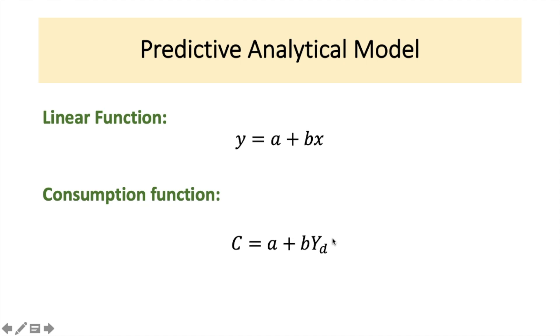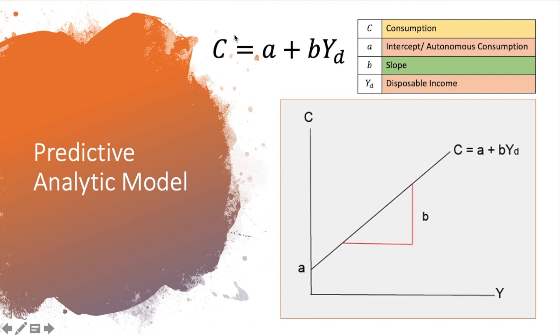Disposable income is income that we get after we minus tax. Let's get into the details of consumption function.